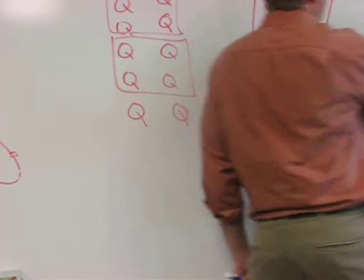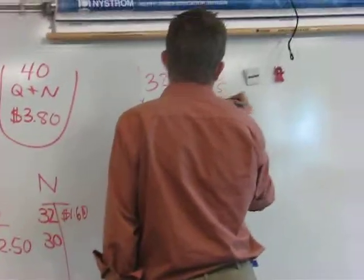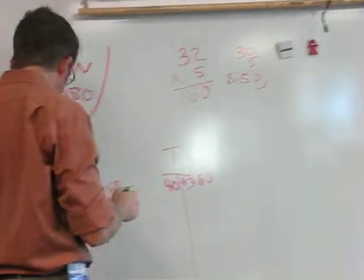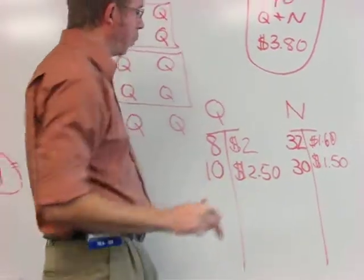30 nickels, 30 times 5. 5 times 0 is 0. 5 times 3 is $1.50.